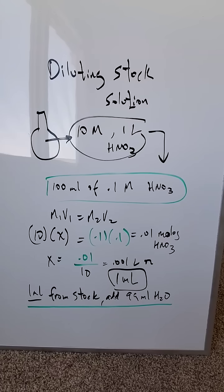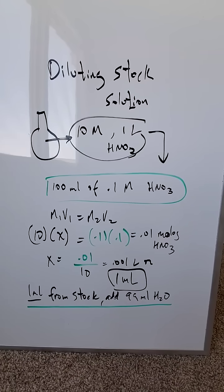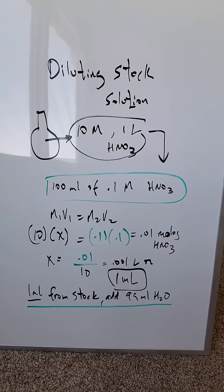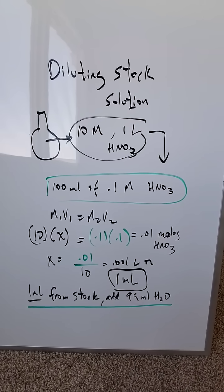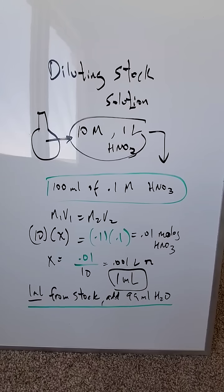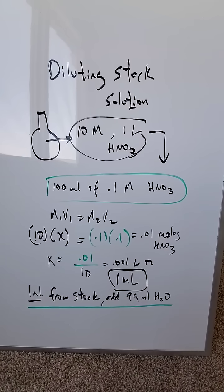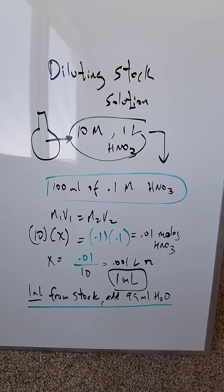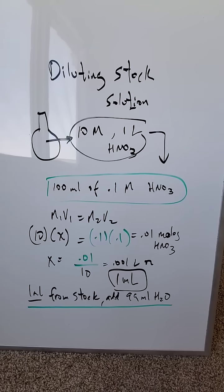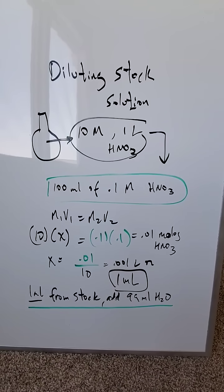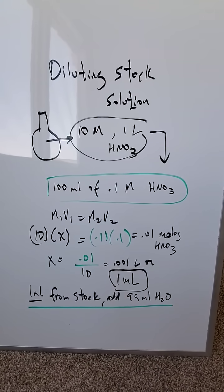You would essentially take out only 1 milliliter of that 10 molar stock solution, then add 99 milliliters of water. That will generate 100 milliliters of the solution you need for your experiment, and it will automatically be diluted down to 0.1 molar because of that addition of 99 milliliters of water.